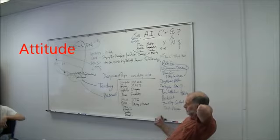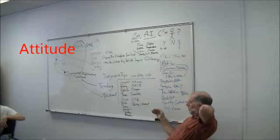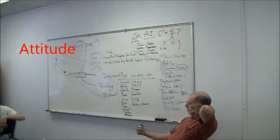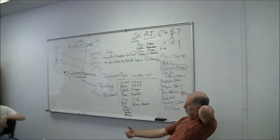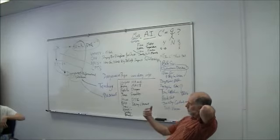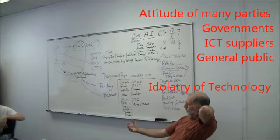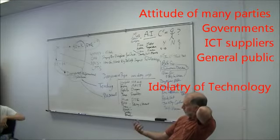So what is the attitude in India that caused the Indian government to go, or whatever government it is, US government, Canadian government, to pile into electronic government? And what is the attitude that the IT suppliers have in the promises they make, and what is the attitude that the public have in accepting it?